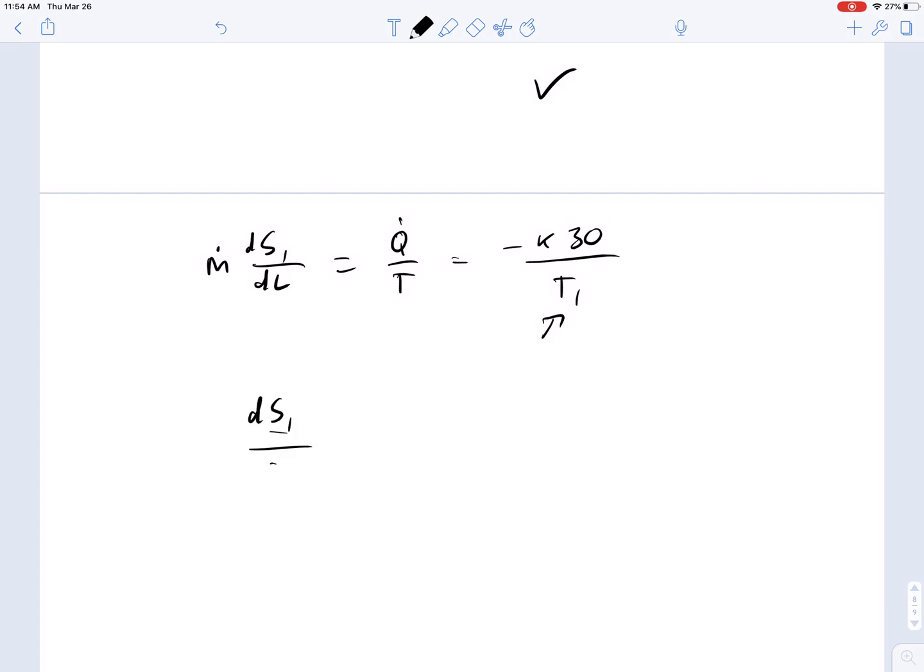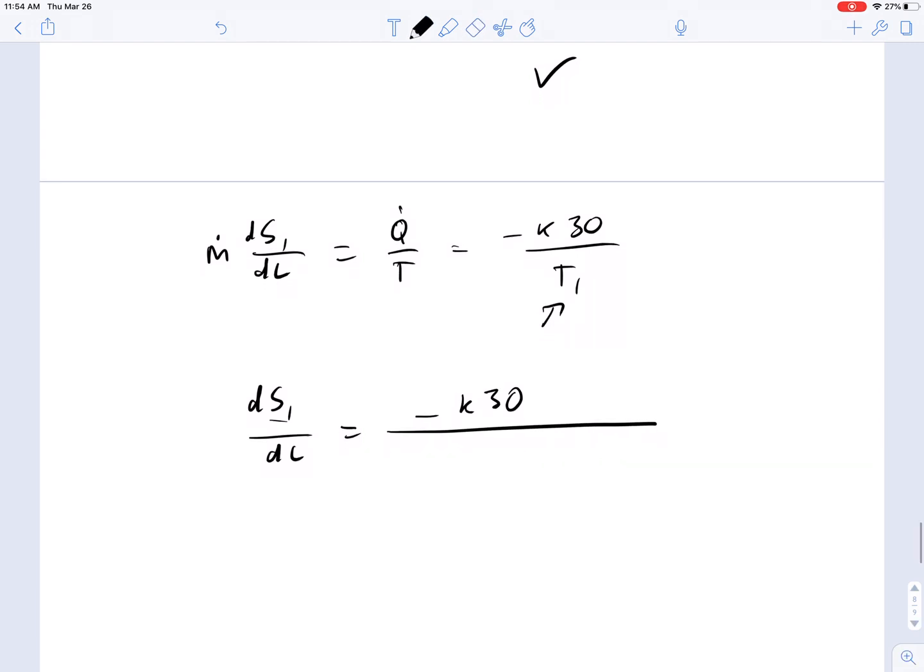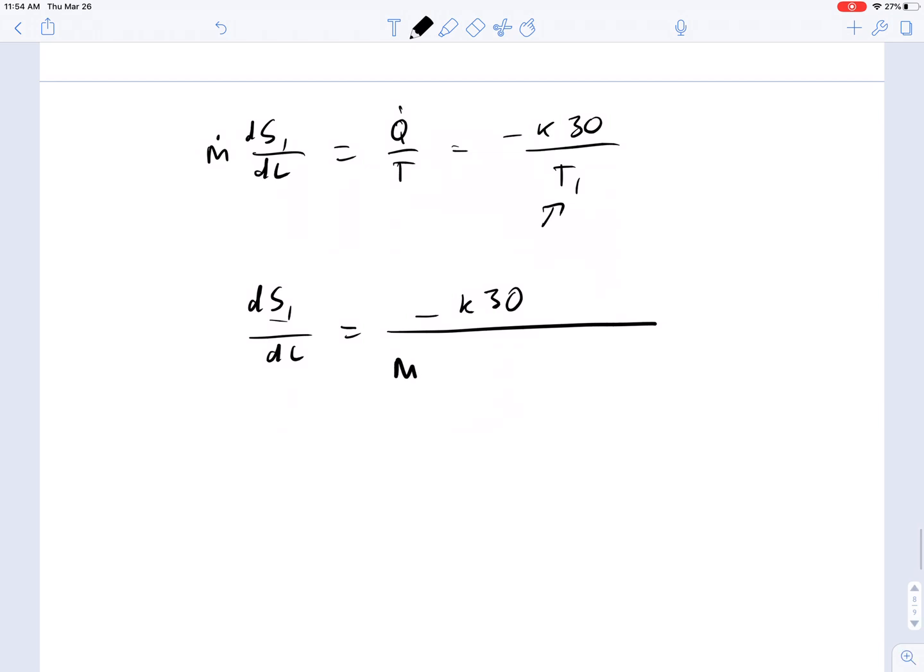We're going to have dS1/dL, then, is equal to minus kappa 30 divided by M dot times 35 minus 30 kappa L over M dot Cp plus 273.15.